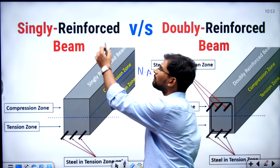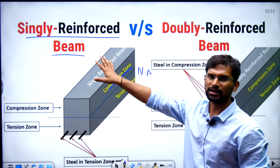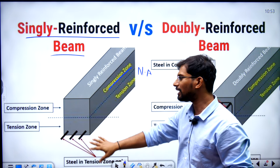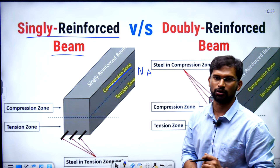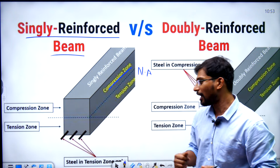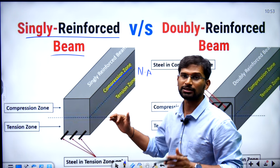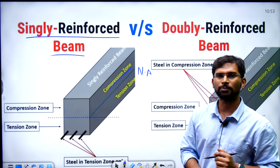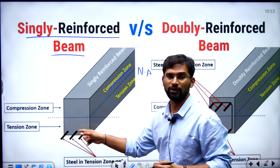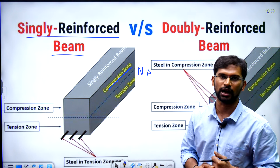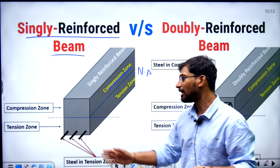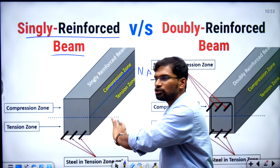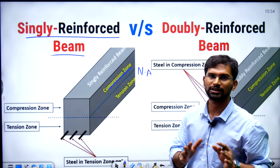So, a singly reinforced beam — 'singly' means only one zone. Out of the two zones — tension zone and compression zone — steel is provided in only one zone. That is called a singly reinforced beam. In that singly reinforced beam, the reinforcement is provided in the tension zone only. Why? Because tensile stresses develop there. The tension steel is placed at the bottom. So, a singly reinforced beam is one where steel is provided only in the tension zone of the beam.